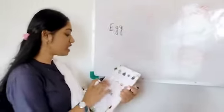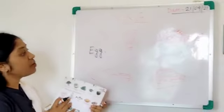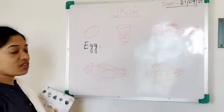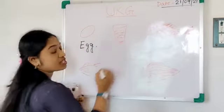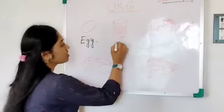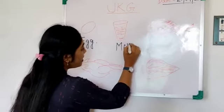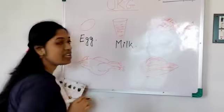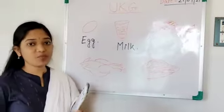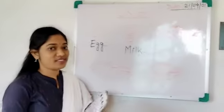Now, the next food item. The next food item is milk. Milk. So, now what is the spelling of milk? M-I-L-K. That is milk. Okay.